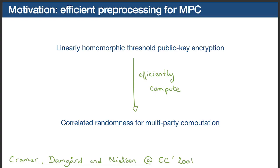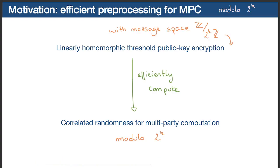In parallel, there has also been a recent interest in developing multi-party computations modulo 2 to the k for a certain integer k. This choice is driven by the fact that modern CPU computations are performed in such a ring. Hence, if the multi-party computation protocol performs computations modulo 2 to the k, protocol designers can directly apply optimizations that are often expensive to emulate if a different modulus is used.